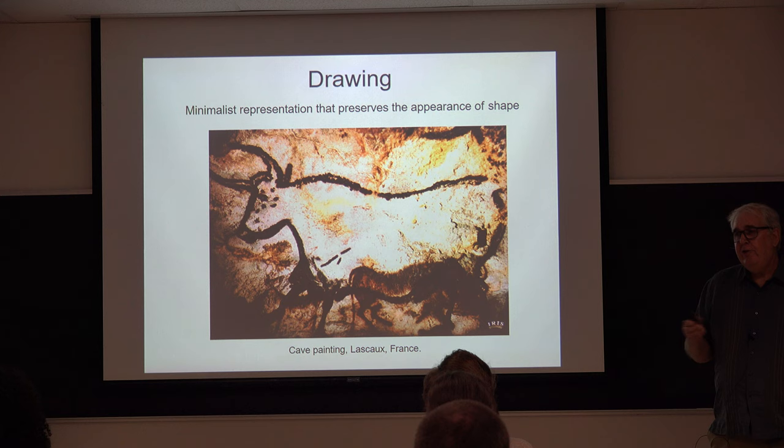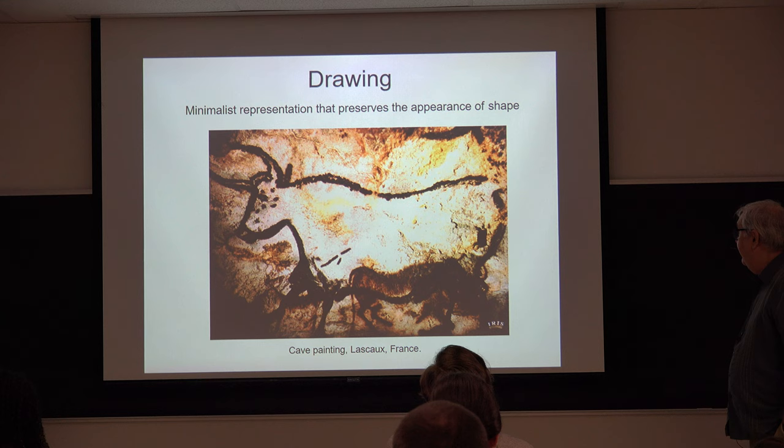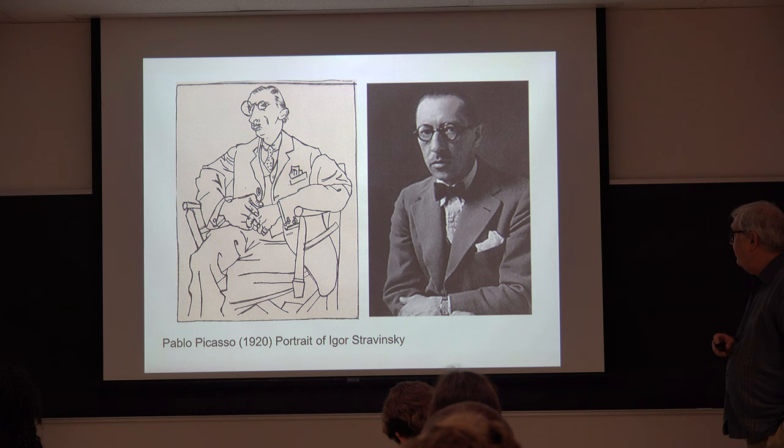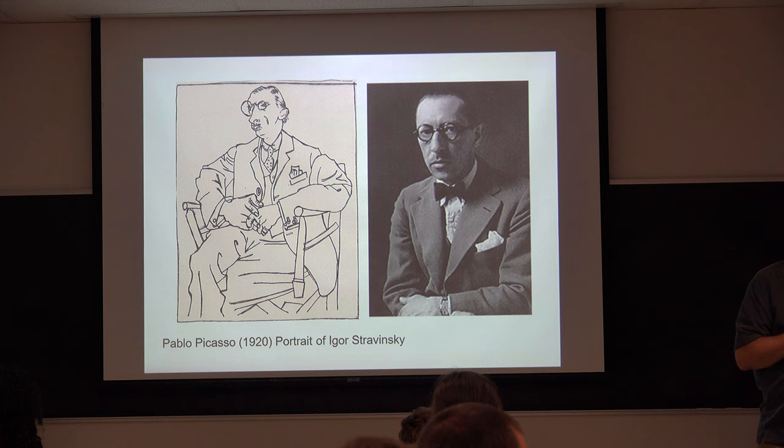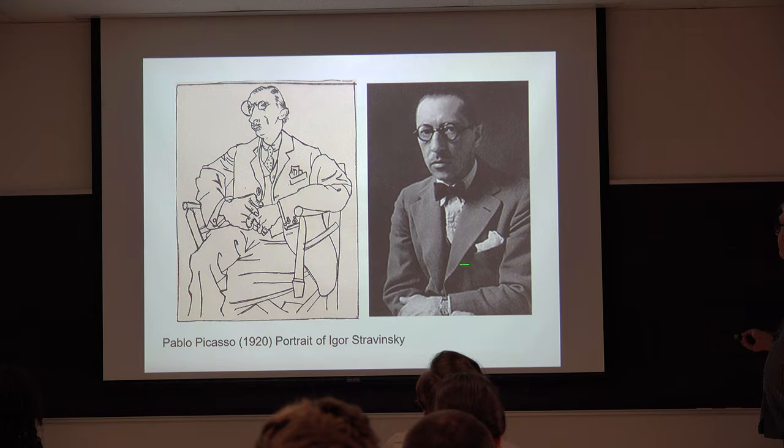Here is a famous example from a cave painting in France, about 30,000 years old. Here are some other examples. This is from Pablo Picasso, 1920 — a portrait of Igor Stravinsky. Here we have a photograph of Stravinsky, and here we have the line drawing by Picasso. Can you all see the likeness there?